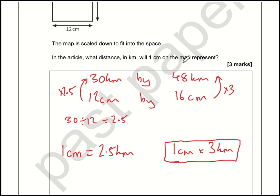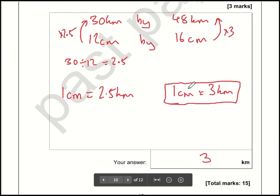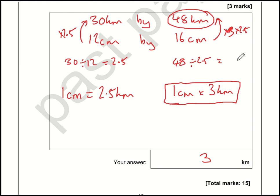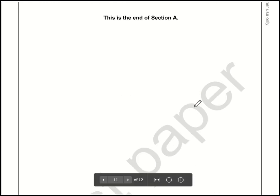In the article, what distance in kilometres will 1 centimetre on the map represent? The answer is 3. The reason we can't use 2.5 is because the real-life distance is 48 kilometres. Going from kilometres to centimetres we divide by 2.5: 48 divided by 2.5 gives 19.2 centimetres. But using a scale of 1 centimetre equals 2.5 kilometres would mean the paper needs to be 19.2 centimetres instead of 16, so it won't fit. Therefore, we must use the scale where 1 centimetre equals 3 kilometres. That is the end of Section A.